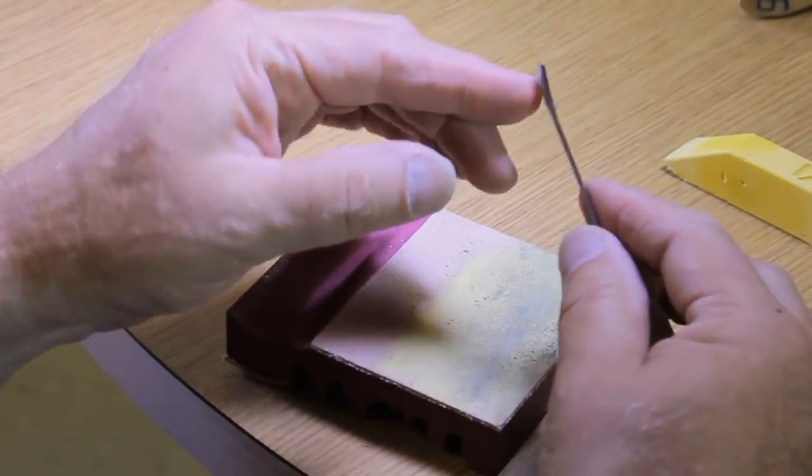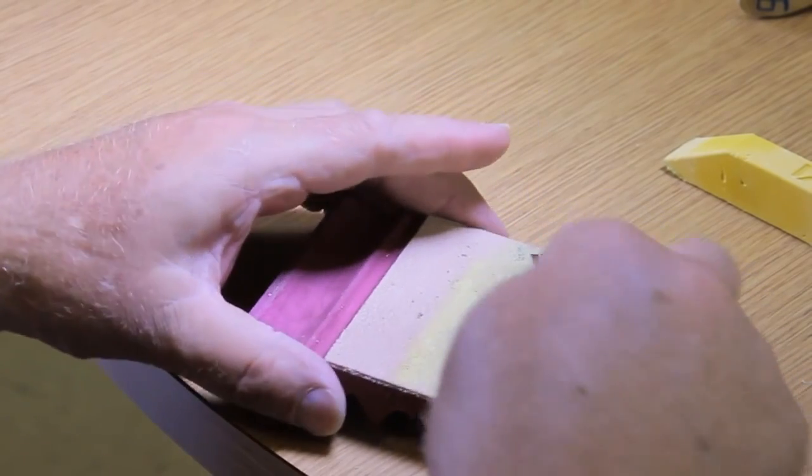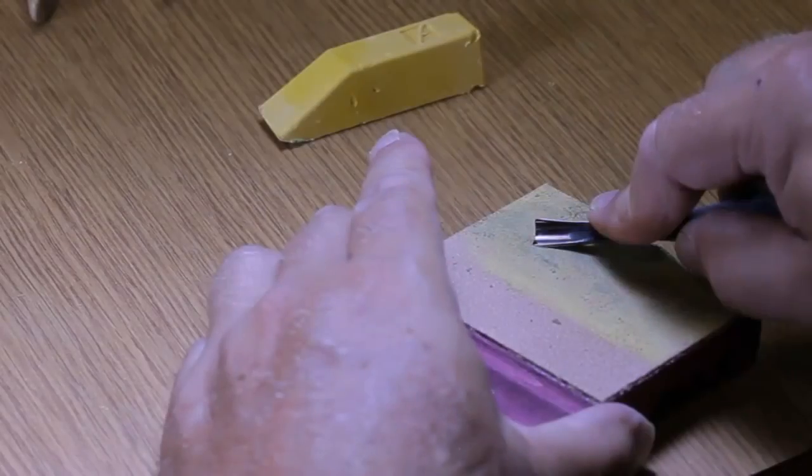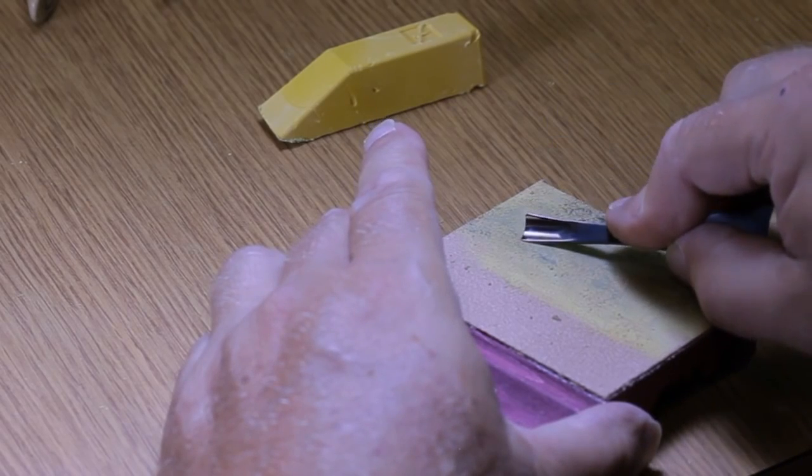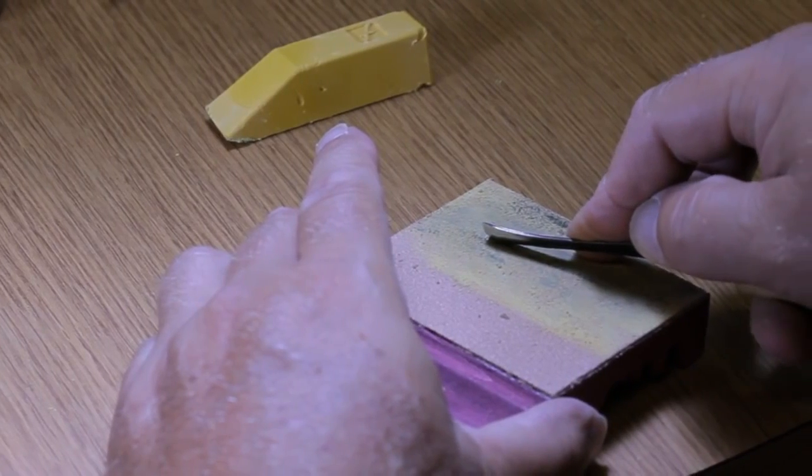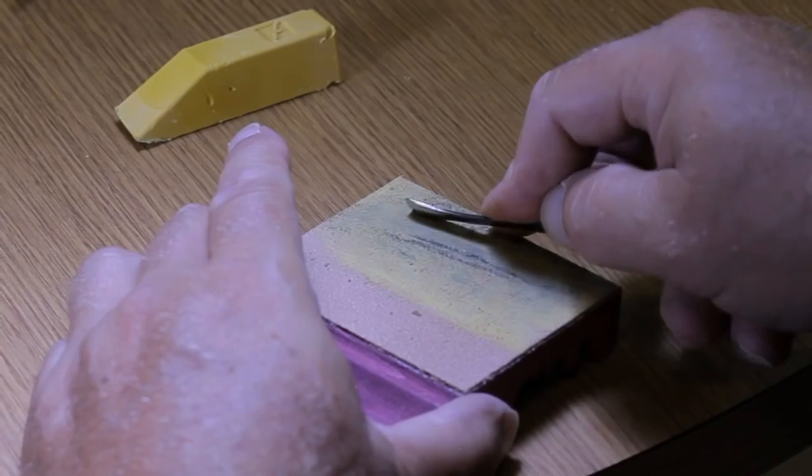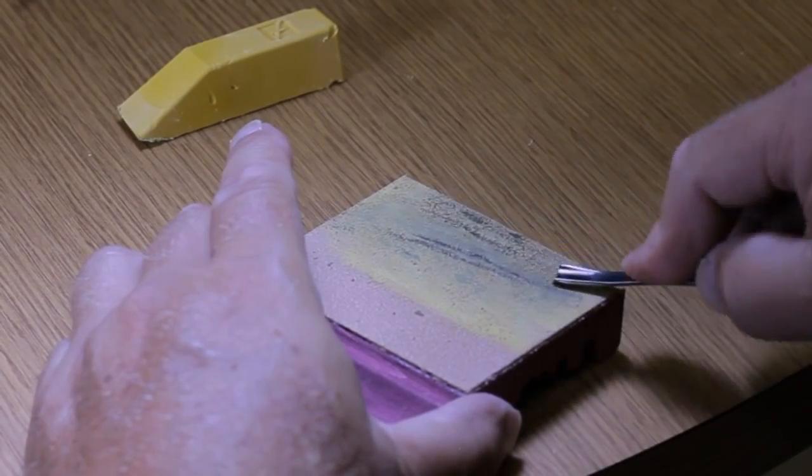To sharpen a gouge, keep the same 15 degree angle for FlexCut. You simply want to start at the outside edge and roll in. Then start on the opposite corner, outside and roll in. Repeat this motion.